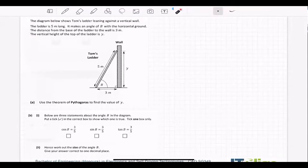So the ladder is five metres long and it's leaning against the wall. It makes an angle of B with the horizontal ground. The distance from the base of the ladder to the wall is three metres. And the vertical height of the top of the ladder is Y. So in other words, the ladder is slanty. If you were just to go straight down, that's what they're calling Y.